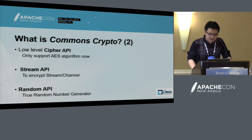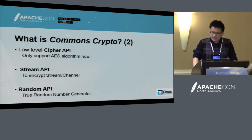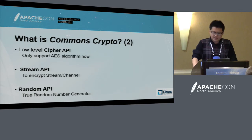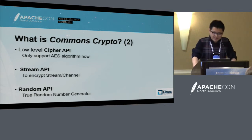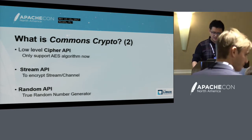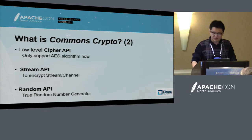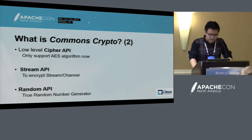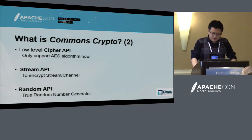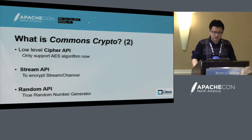Let's look at the features of Apache Commons Crypto. It provides low-level algorithms — currently only AES. You can use it to encrypt your data and implement your own cryptographic protocols. It also provides a streaming API, so you can use the high-level API to encrypt and decrypt your data from a stream or channel. We also provide a random API with a true random number generator, accelerated by hardware.